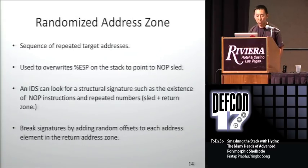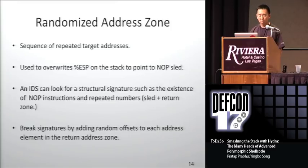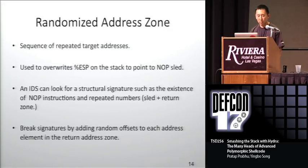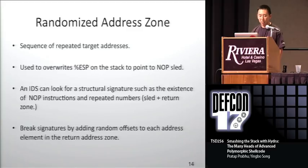Randomized return zones: the randomized return address zone is basically a sequence of repeated target addresses that point to the no-op sled. When you write a simple stack exploit, you're hoping that one of these addresses overrides the EIP on the stack. When the function returns, it jumps into your no-op sled. The basic way to randomize this zone is to add random offsets to each of the individual address components, which breaks signatures by completely randomizing each component of the address zone.